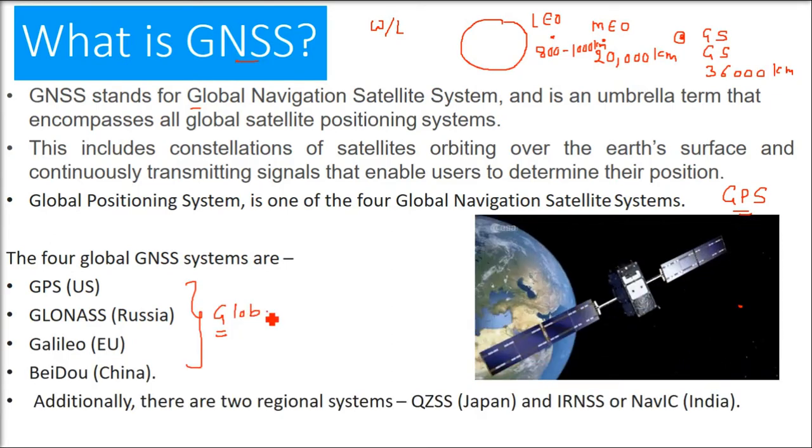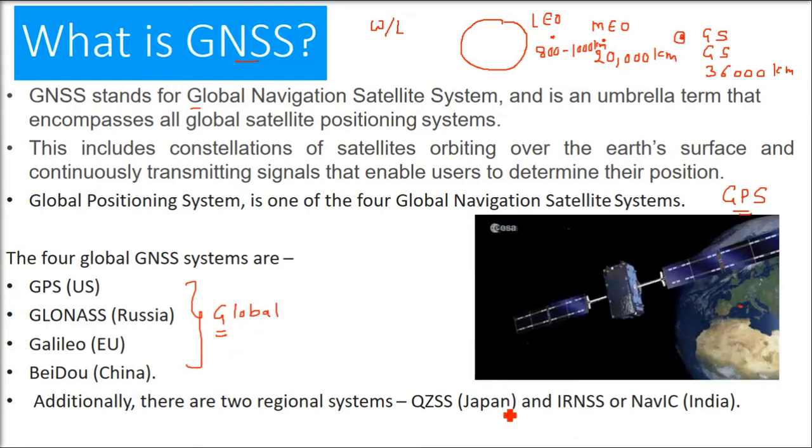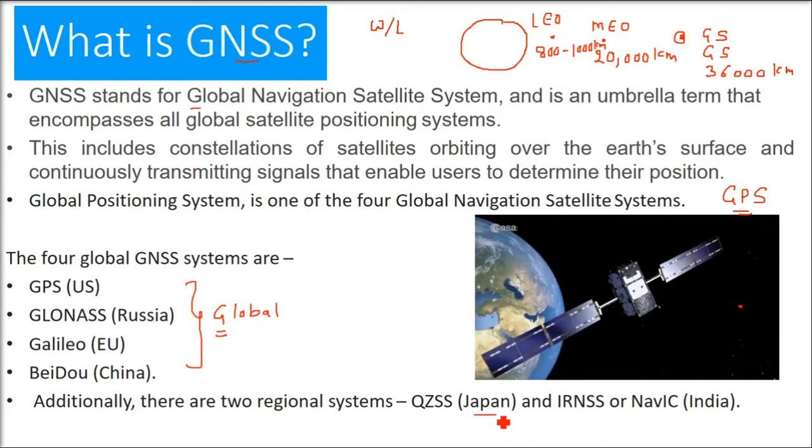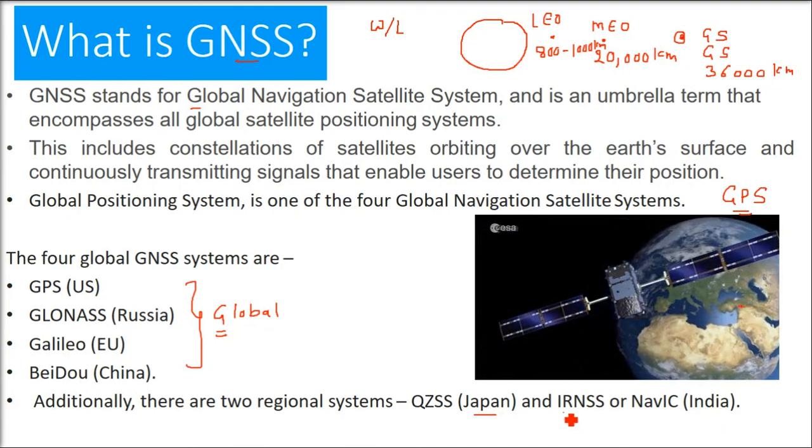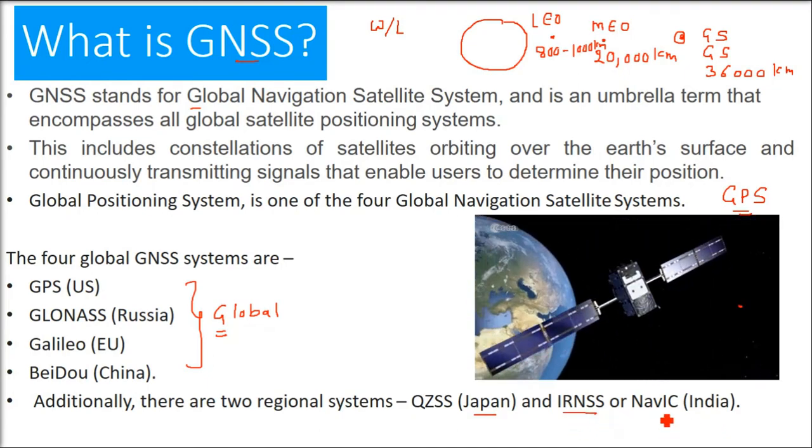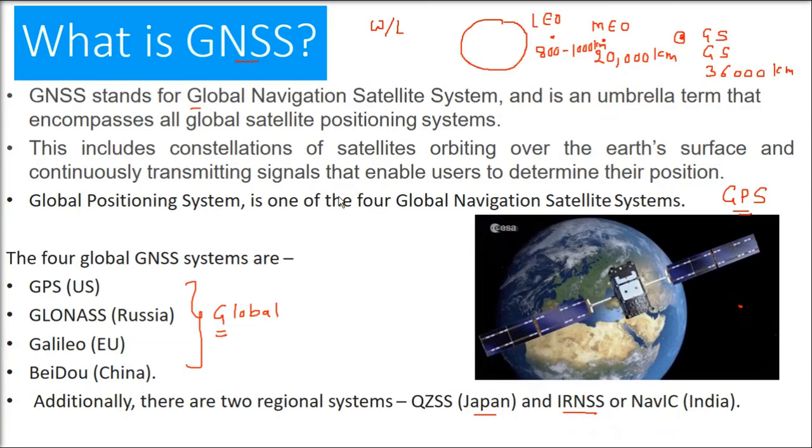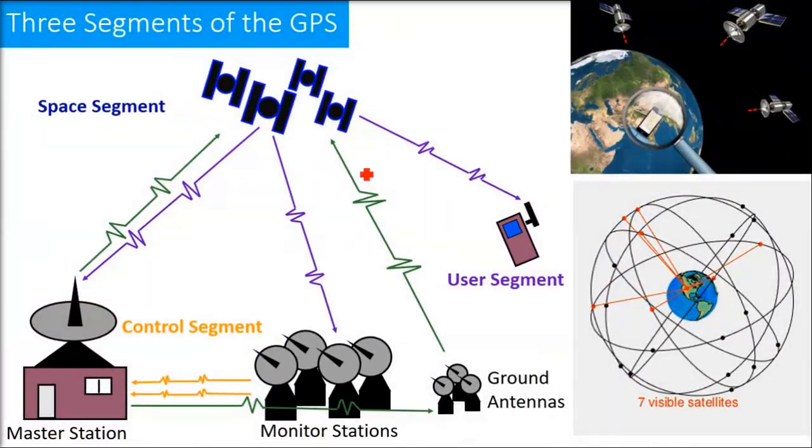Then we have two regional systems as well: QZSS from Japan, and IRNSS, or now it is called NavIC, which is the Indian constellation.